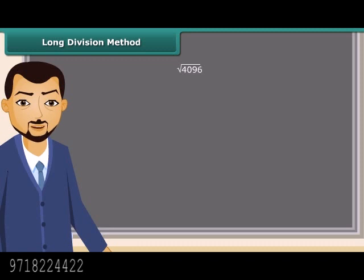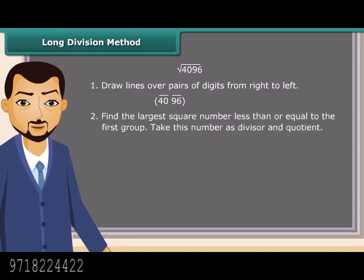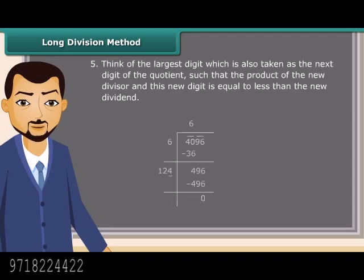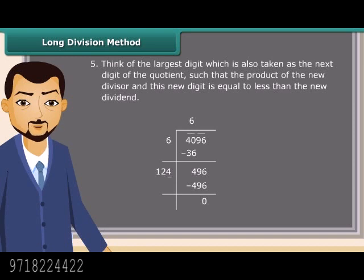For large numbers, the prime factorization method of finding square root becomes difficult, so we use the long division method. First, draw lines over pairs of digits from right to left. Next, find the largest square number less than or equal to the first group — since 36 is less than 40, we take 6 as the divisor and quotient. Subtract 36 from 39, then bring down the next bar 96. Double the divisor, then find the largest digit such that the new divisor times this digit is less than or equal to the new dividend. Here, 124 × 4 = 496, and since the remainder is 0, the square root of 4096 is 64.